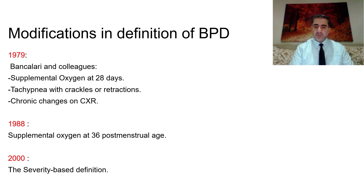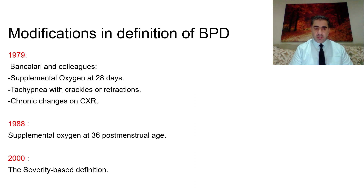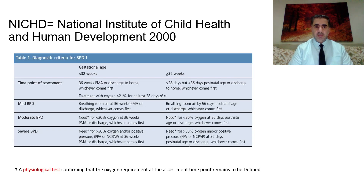The definition of bronchopulmonary dysplasia started to be modified over time. The initial modification came in 1979 by Bancalari and colleagues — a well-known figure in BPD — who updated the definition to include supplemental oxygen at 28 days, tachypnea and crackles or retractions, and chronic changes on chest x-ray. In 1988 the definition was modified to include only supplemental oxygen at 36 weeks post-menstrual age. In 2000, the severity-based definition came from the National Institute of Child Health and Human Development.